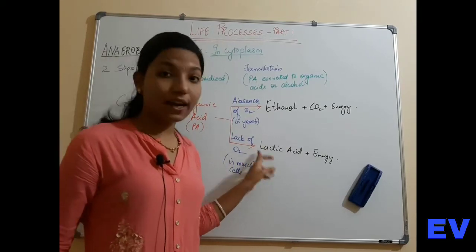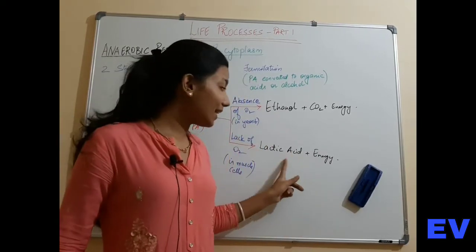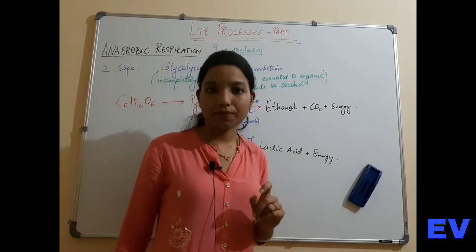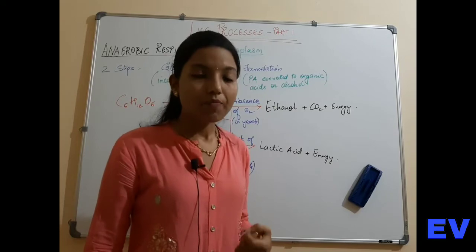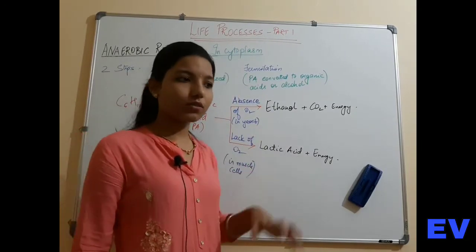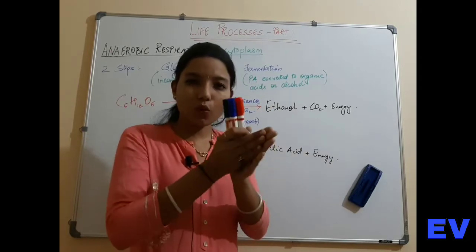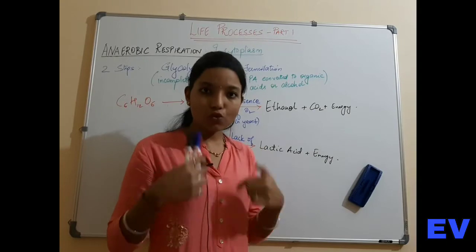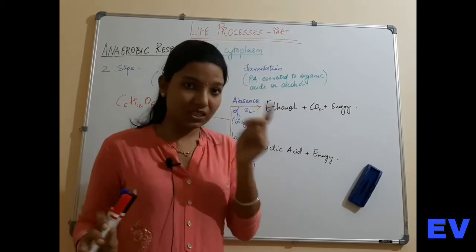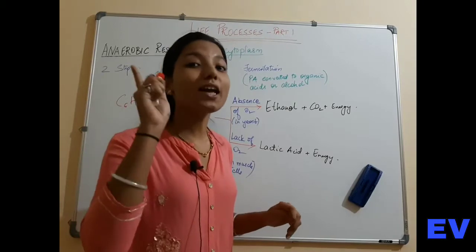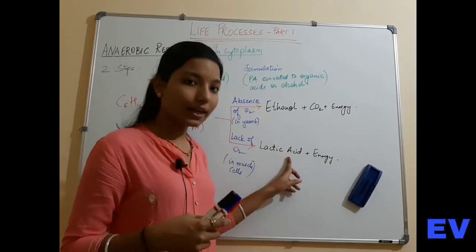In lack of oxygen — which happens in our muscle cells — lactic acid and some amount of energy are produced. It is because of this lactic acid that our muscles get cramps, they start aching, and we get tired. Lactic acid production should not be too much in our body as it causes problems. That is why during running or exercise, short breaks are taken — so that lungs can filter oxygen and deliver it properly to the cells.